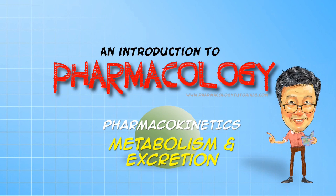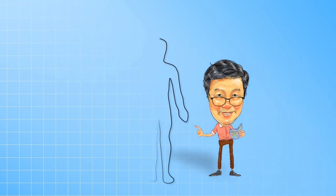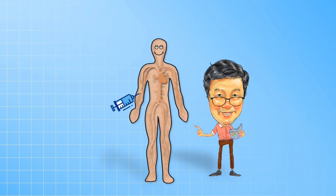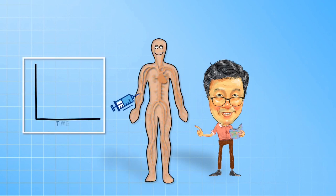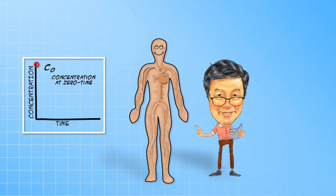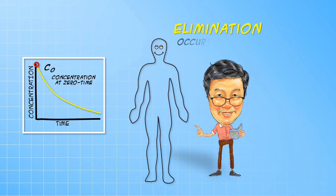In the last video, we made reference to a theoretical concentration at zero time when the drug is fully in the systemic circulation but before it is subject to elimination. It is theoretical because once the drug enters the circulation, some elimination inevitably takes place.